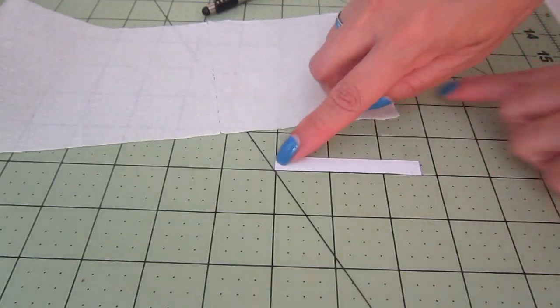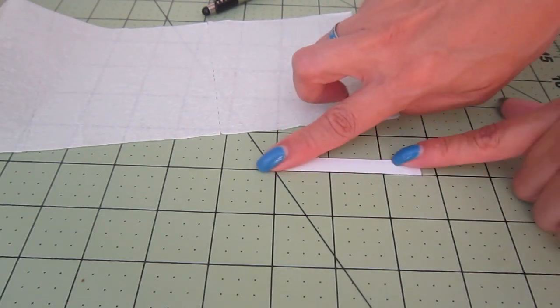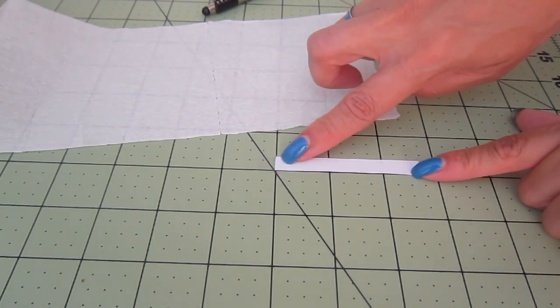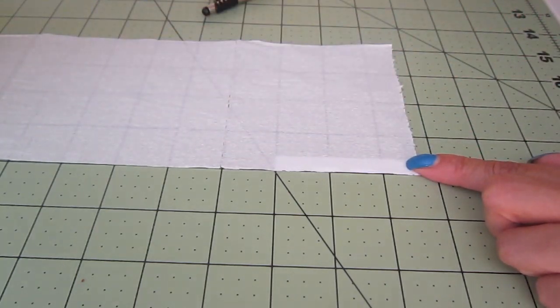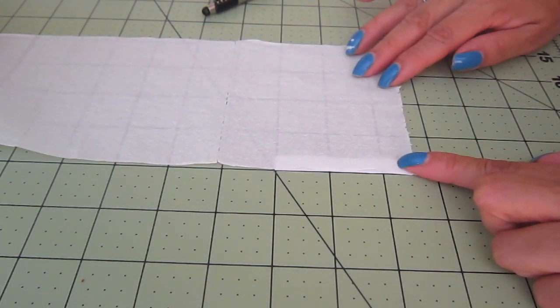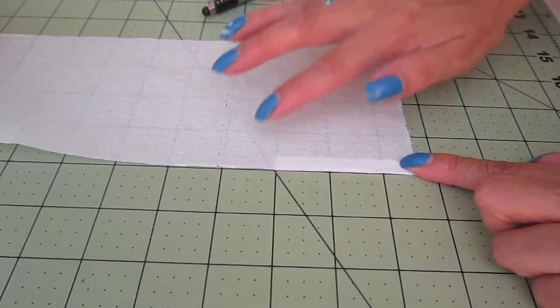I cut this little strip of paper to the exact measurement of the width. And this is going to help guide me cut the toilet paper because being so soft, it's a little more difficult to stay accurate.